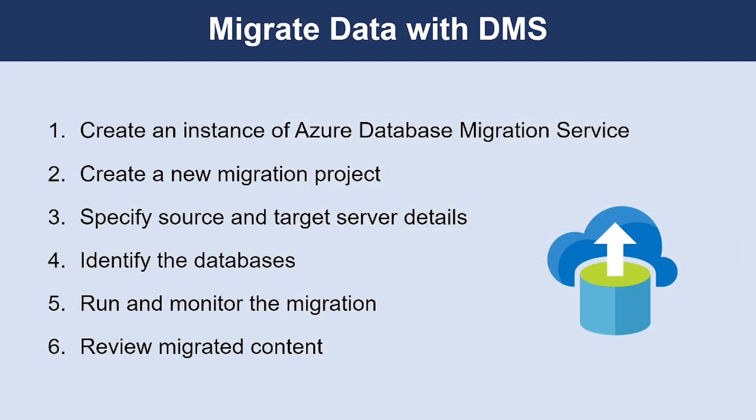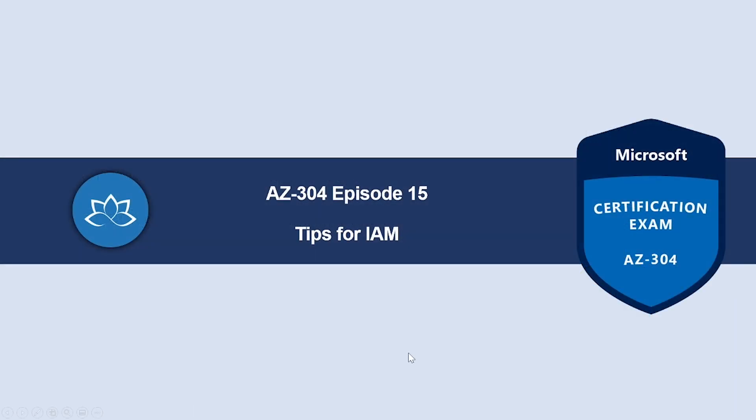Finally, migrate the data with the DMS service. In the Azure portal, you just need to follow these steps to create the instance of the Data Migration Service and then run it to migrate your data and database. When these steps are complete, your schema and data have been migrated to the Azure SQL Database instance, and you can then shut down and decommission your on-premises database and servers. That concludes this episode.